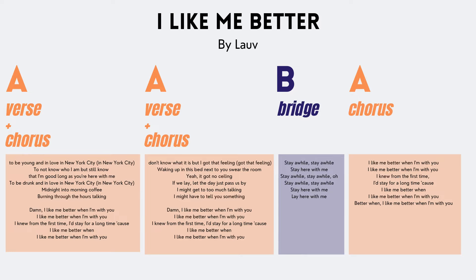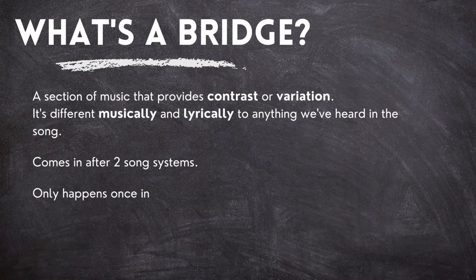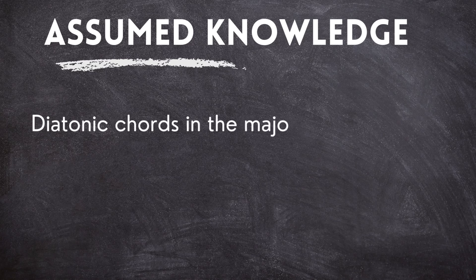That variation creates a complete refreshment of the ear so that if we want to, we can come back and repeat something we've already heard, and that return to the repetition actually feels extra good because we're returning to something familiar via something new, refreshing, and different. A bridge section is a great solution to that requirement of the ear to hear something change at that moment in the song form. The other really important characteristic of a bridge is that it will typically only happen once, where the other sections repeat themselves.